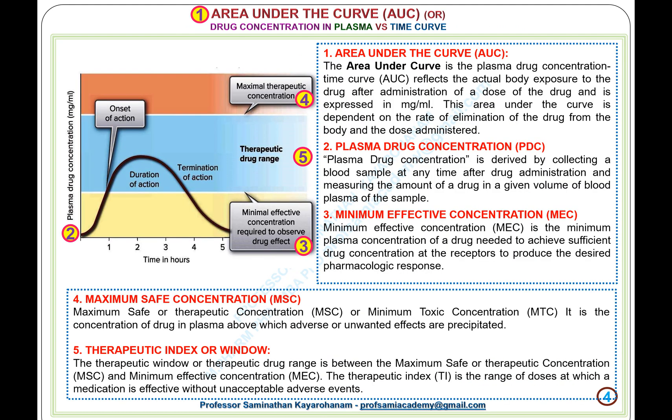Area under the curve (AUC), or drug concentration in plasma versus time curve. The area under curve (AUC) is the plasma drug concentration-time curve, reflecting the actual body exposure to the drug after administration of a dose, expressed in mg/mL. This AUC is dependent on the rate of elimination of the drug from the body and the dose administered.